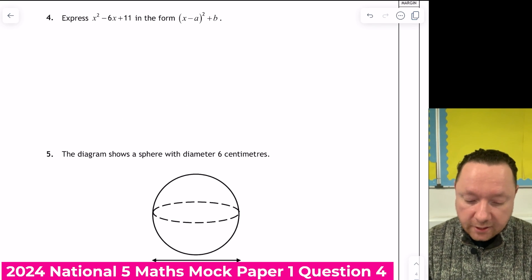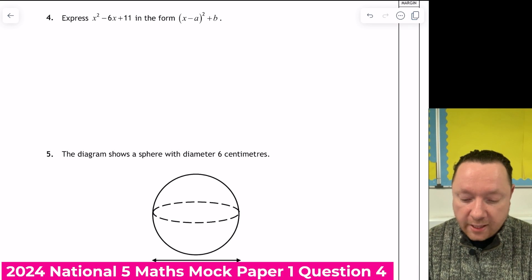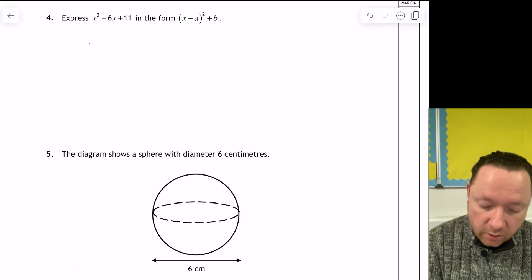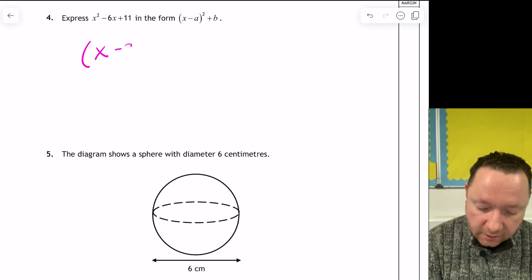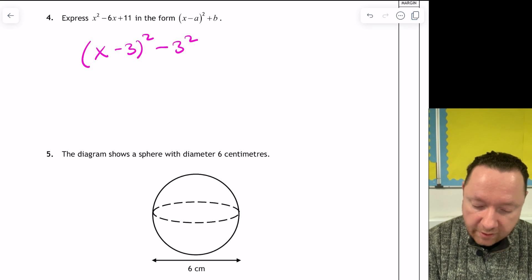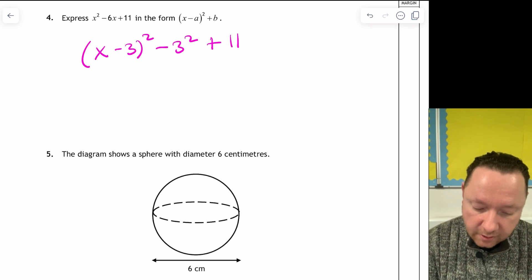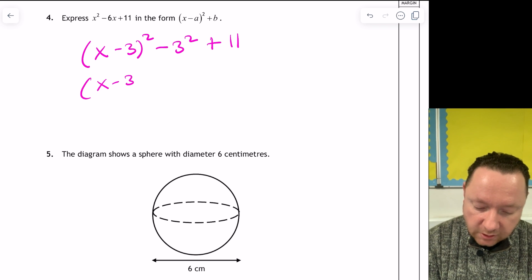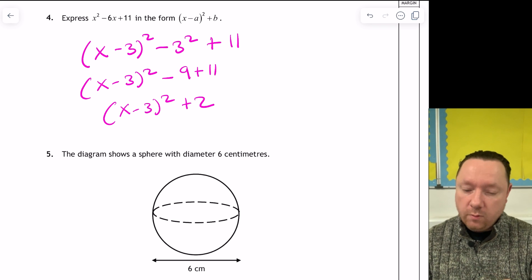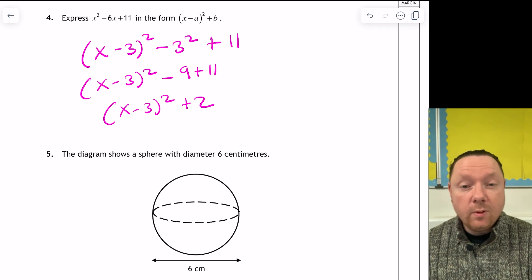Question 4. Completing the square. x squared minus 6x plus 11 in the form x minus a squared plus b. There's lots of ways to do these. This is just how I do it. Half the middle term. x minus 3 squared. Immediately take away 3 squared, and I've still got plus 11 on the end. So that gives me x minus 3 squared minus 9 plus 11. x minus 3 squared plus 2. Notice it's take away 3 squared, not minus 3 squared.